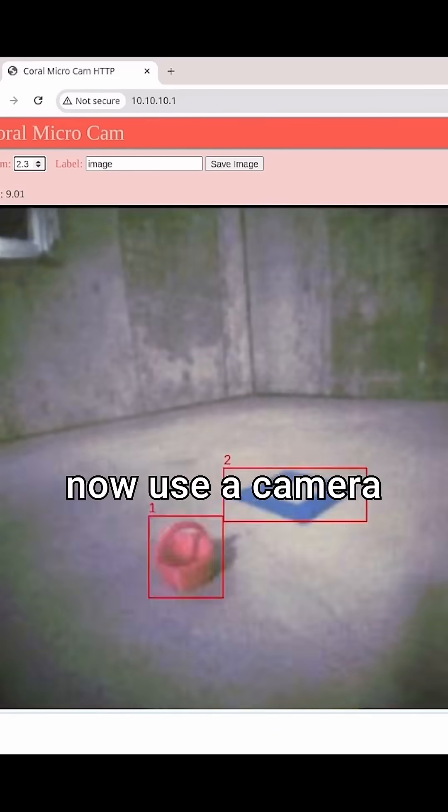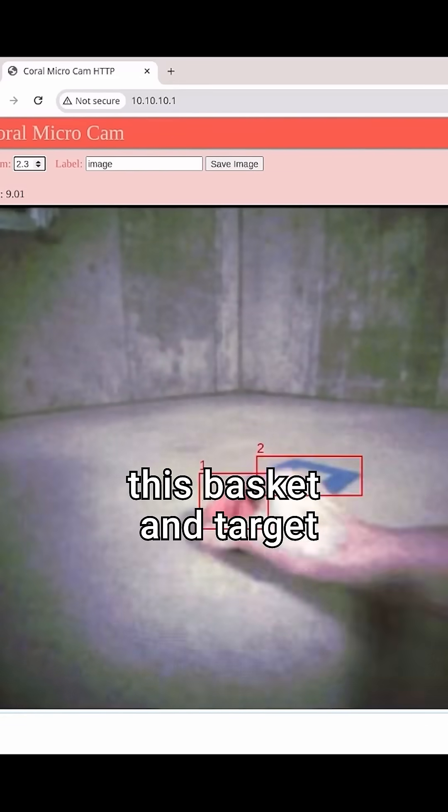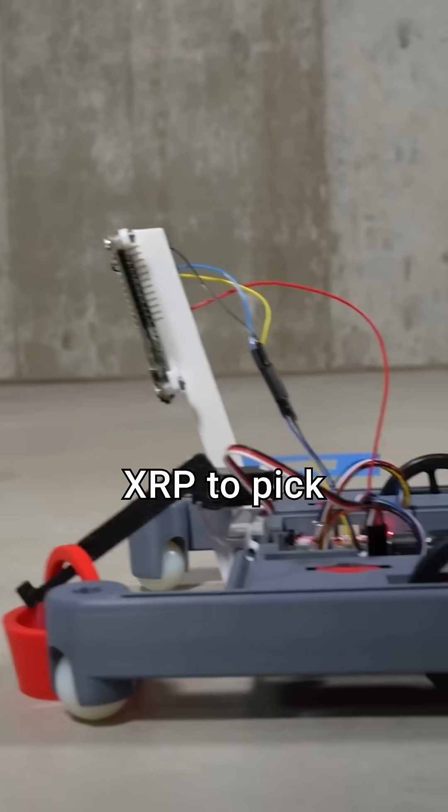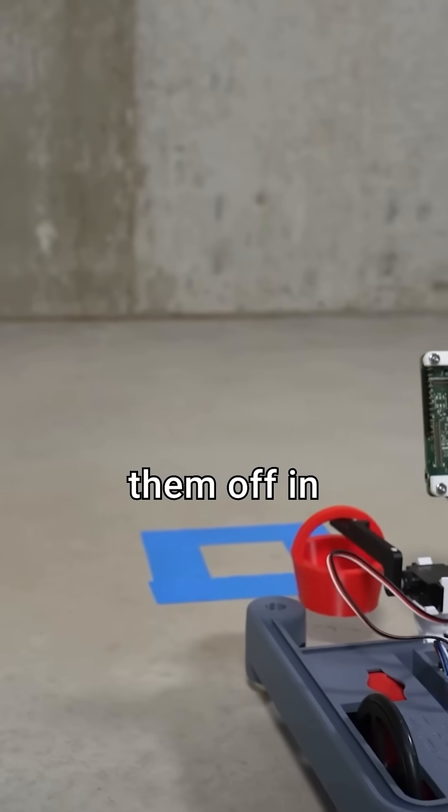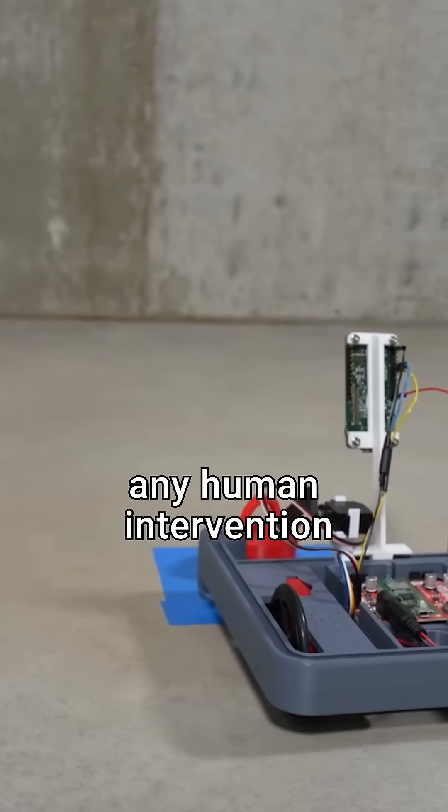With that, the XRP can now use a camera to identify objects like this basket and target zone, which means we can program the XRP to pick up objects and drop them off in a specific area without any human intervention.